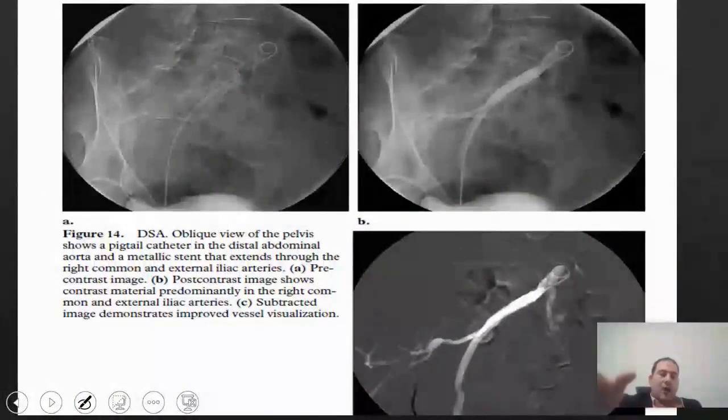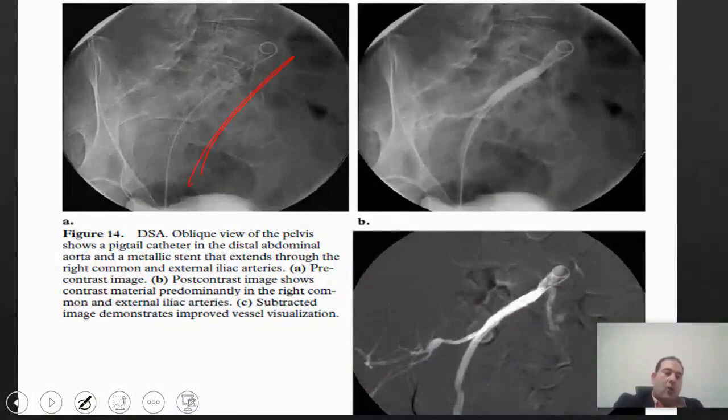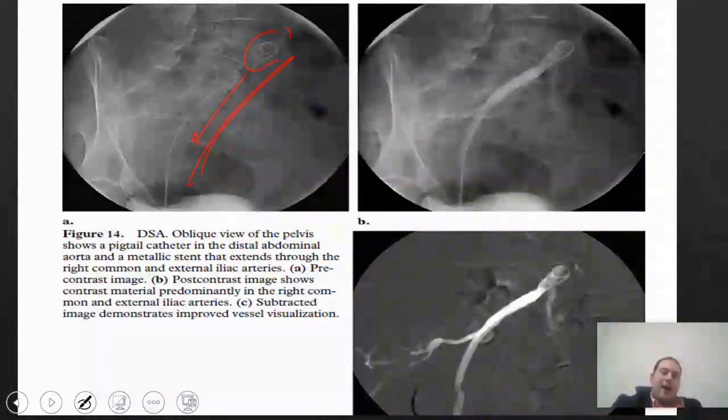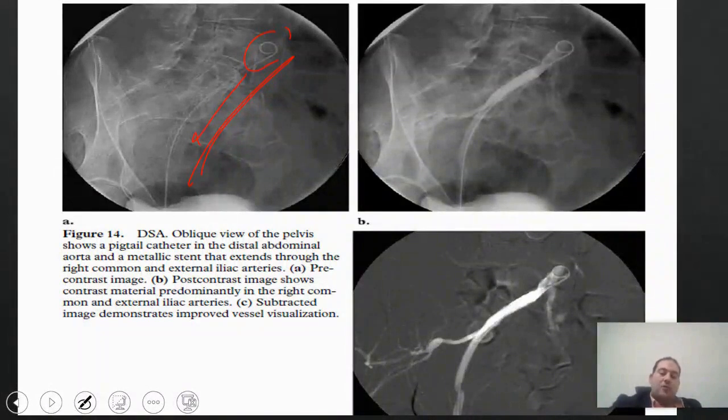The same idea applies here. It's a case where the patient is wearing something, and there is a pre-contrast image. After we inject the contrast agent, we want to show the contrast within the aorta, and it appears in this way.